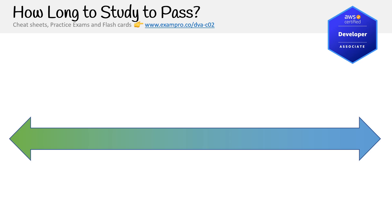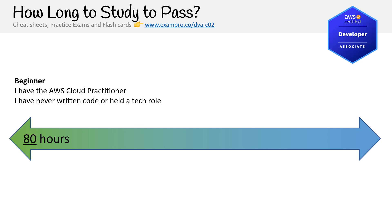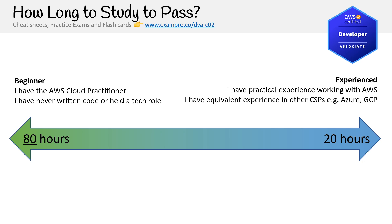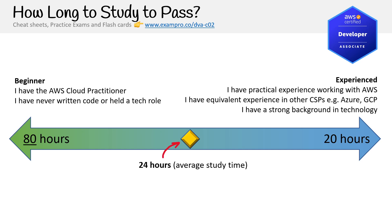How long will it take to pass? There's a lot of content, and because this one is more programmatically driven, I've given it a higher study time estimate. This assumes you have the Cloud Practitioner but have never written code or held a tech role. If you're experienced, it's always around 20 hours. You might not want to do the labs completely — you might speed through them, gather the knowledge watching me troubleshoot, and focus on lecture content. Average study hours here is probably 24, though it should be higher like 32. Split roughly 50/50 between lecture and labs, and about 25% on practice exams.